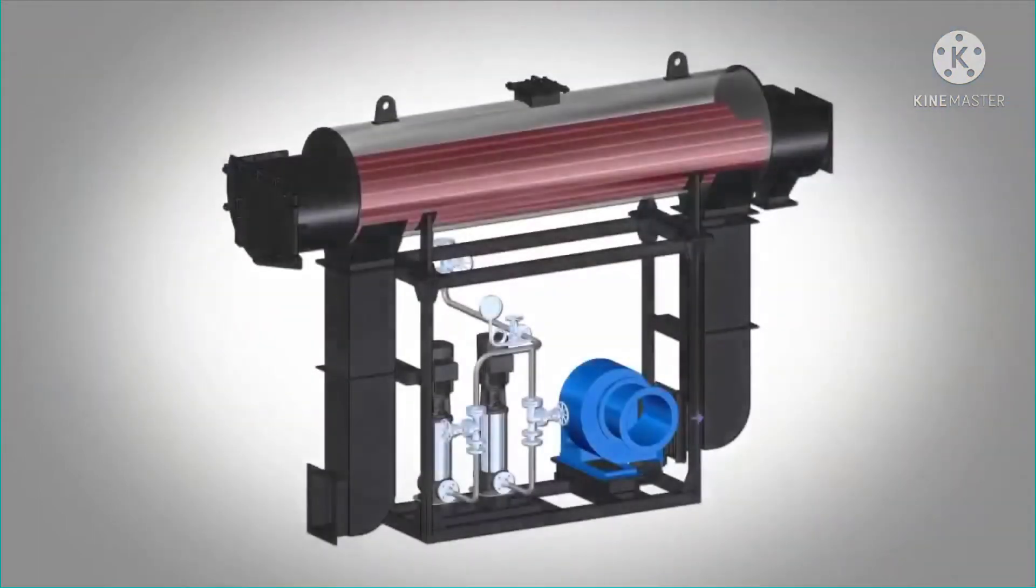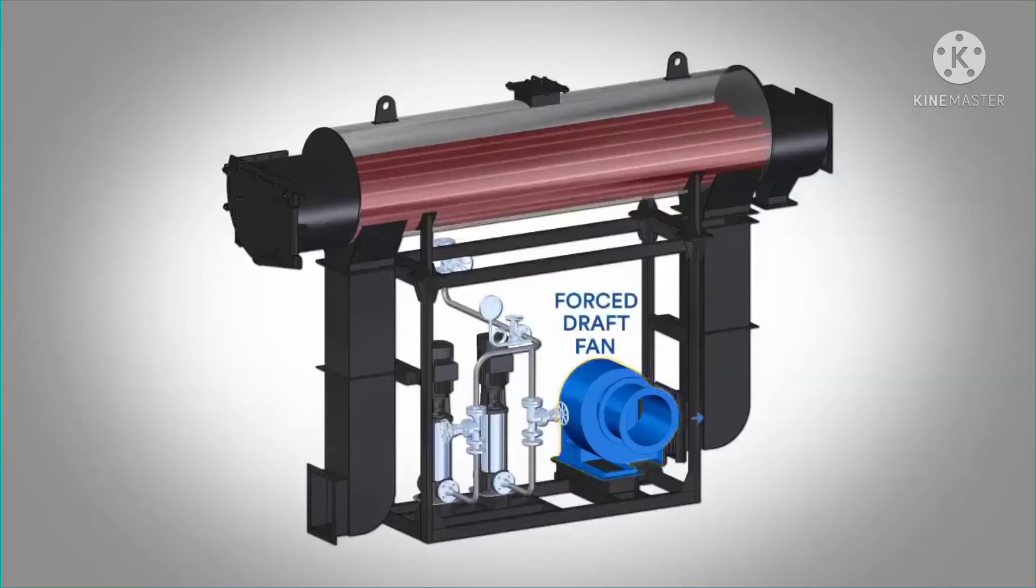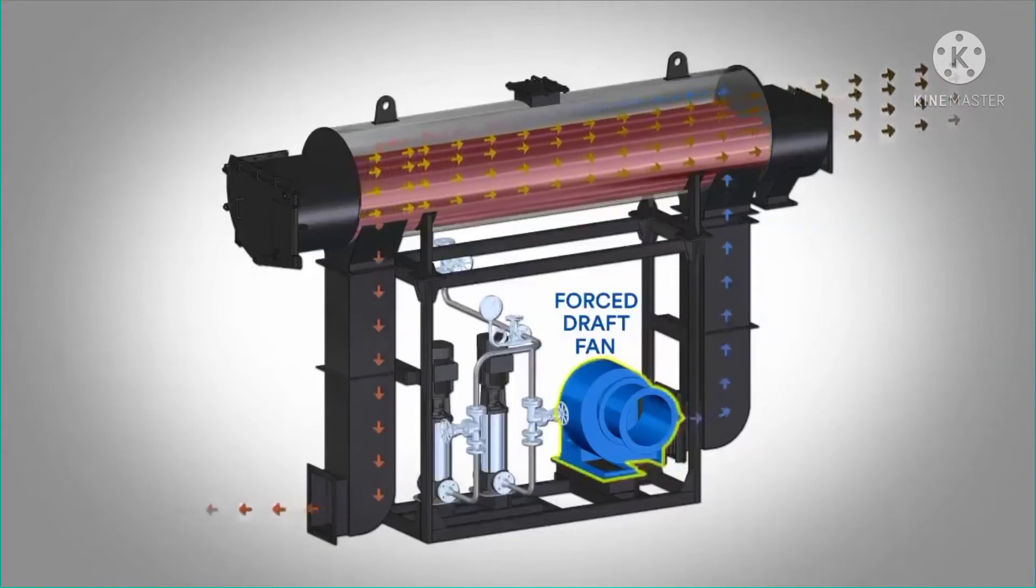Comblock has a balanced draft system of transporting the combustion air and flue gases. In this method, a forced draft (FD) fan pushes the air required for combustion to the combustion chamber through air ducting. The flow of air can be controlled by dampers.